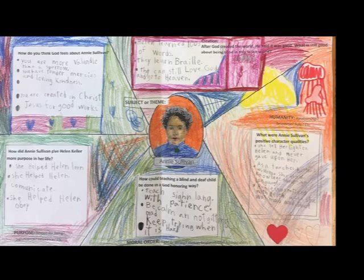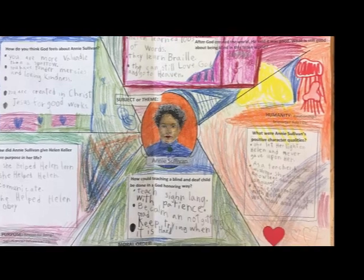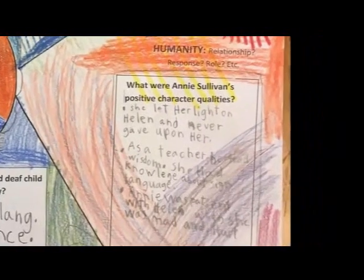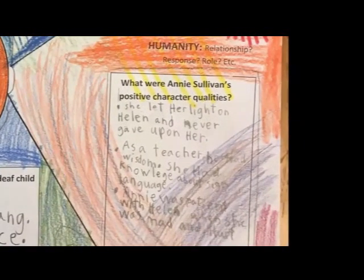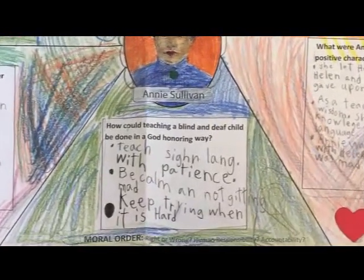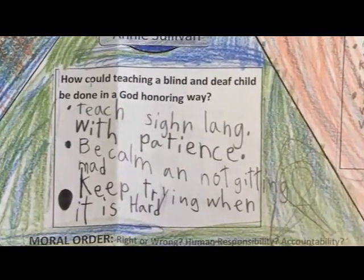That's a remarkable question — and these are second graders! This was an amazing lesson; they connected deeply to these questions. For the humanity area: What were Annie Sullivan's positive character qualities? And in the moral order area: How could teaching a blind and deaf child be done in a God-honoring way? Let's talk about that — what did they come up with on that one?